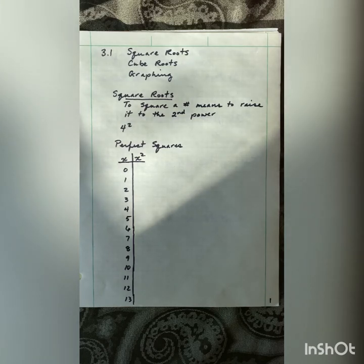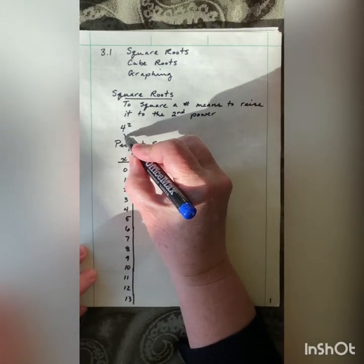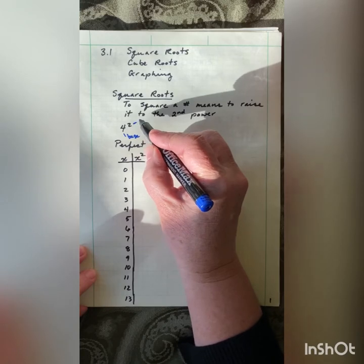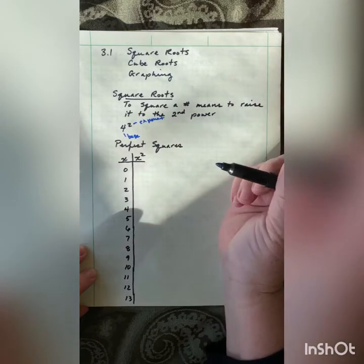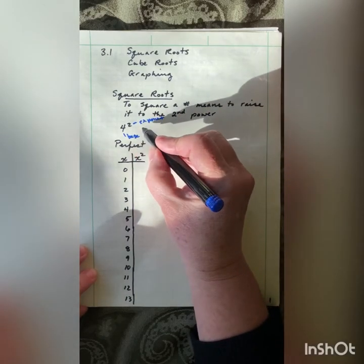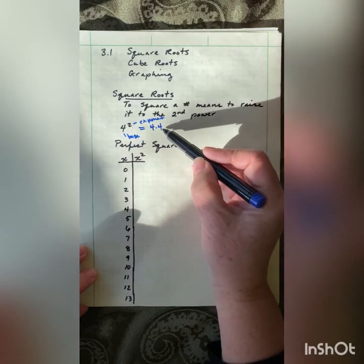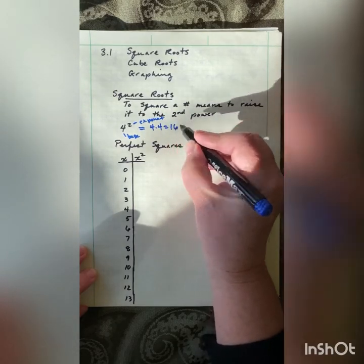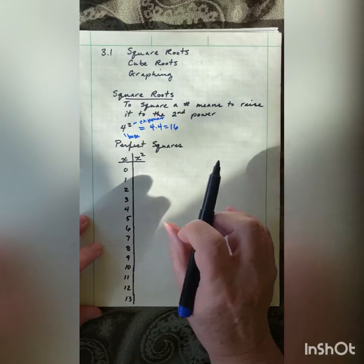First thing we're going to do is talk about square roots and the basics. To square a number means to raise it to the second power. So if I have 4 squared, 4 is my base, and the little 2 is my exponent. The exponent tells me how many times I need to use the 4 as a factor. In expanded form that would be 4 times 4, so 4 times 4 is 16. This is a perfect square, and we need to know our perfect squares.